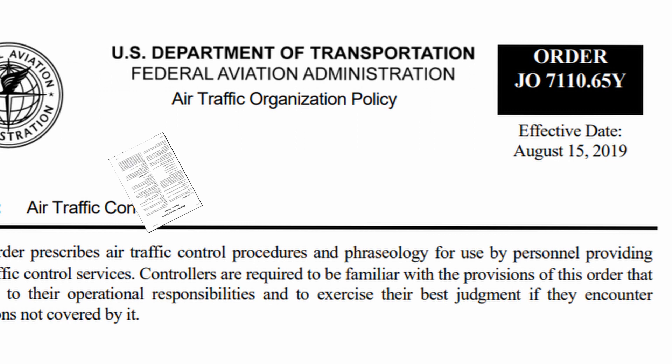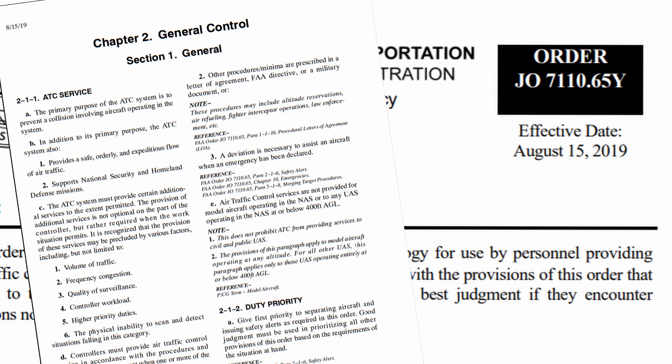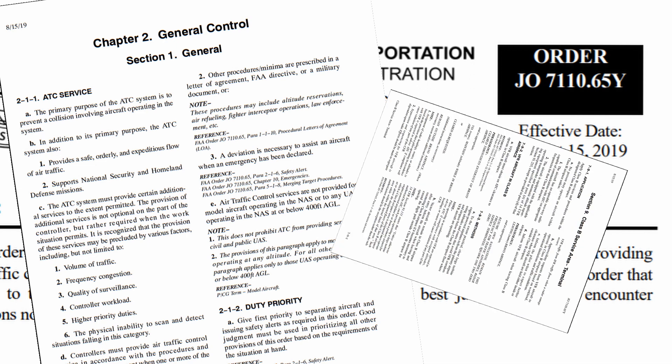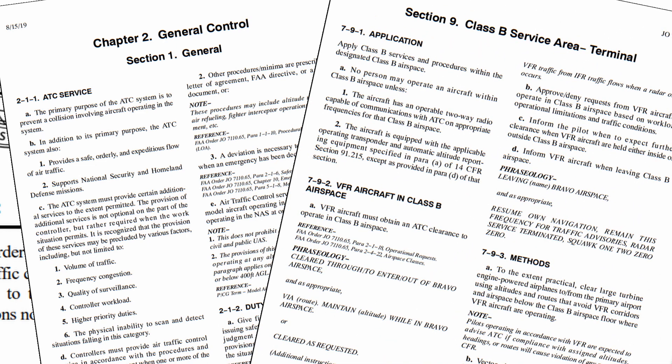Joint Order 7110.65 not only specifies the responsibilities and duties of ATC, but also provides examples of how ATC communicates with you to coordinate your flight, so it's a really good source to refer to. There's a link in the description below. In this joint order, it states that the priority of ATC is to prevent collision for airborne aircraft. Additionally, it provides verbology for ATC to use when communicating with aircraft — for example, when ATC uses the term 'resume own navigation,' those words come right out of this joint order.